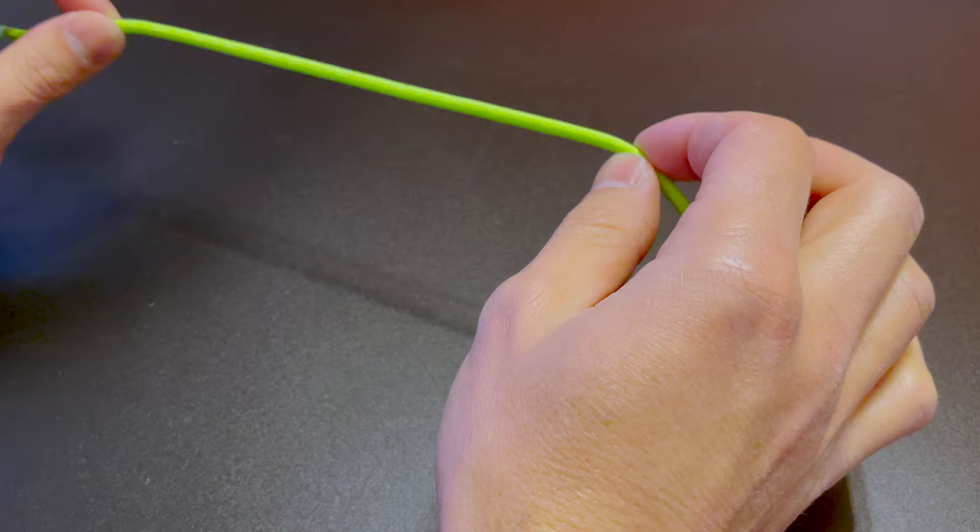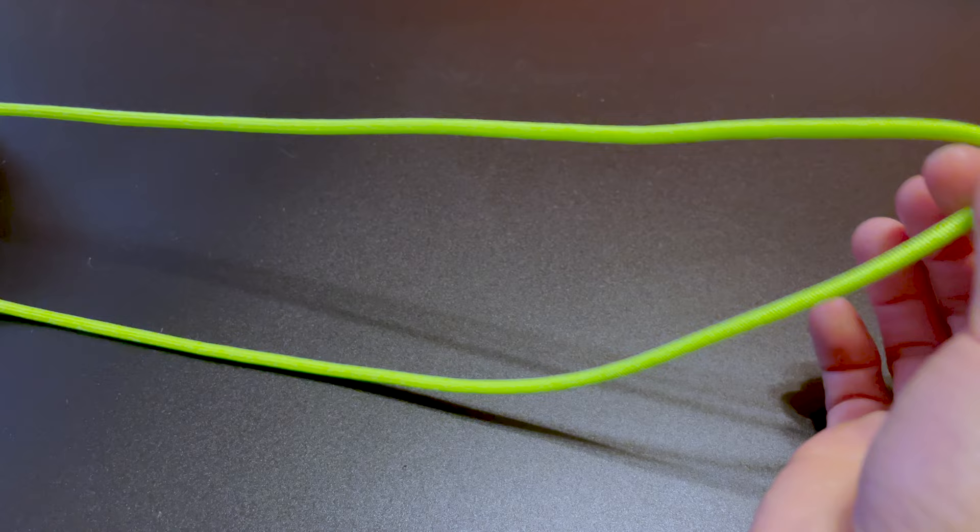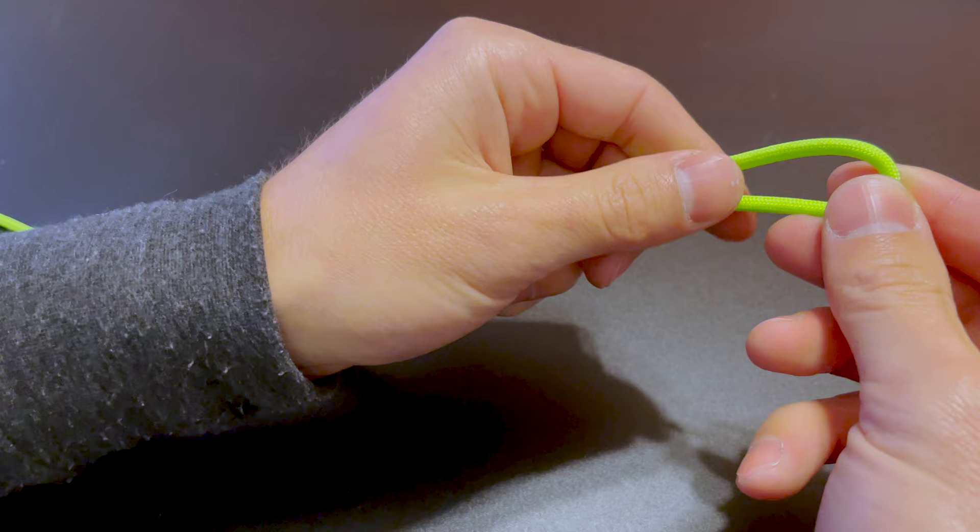To get started, let's imagine this is your leader line. It could be mono or fluoro. Just fold it over itself so that it has this little loop.